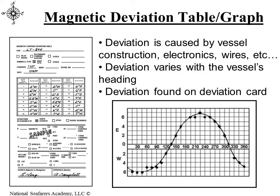So where do we find the deviation in practical application? Well, somebody called the compass adjuster comes out and swings the ship. They adjust the compass to alleviate as much deviation as they can, and then the residual deviation is given to you on a compass card or a graph. The deviation is going to be per heading of the vessel.